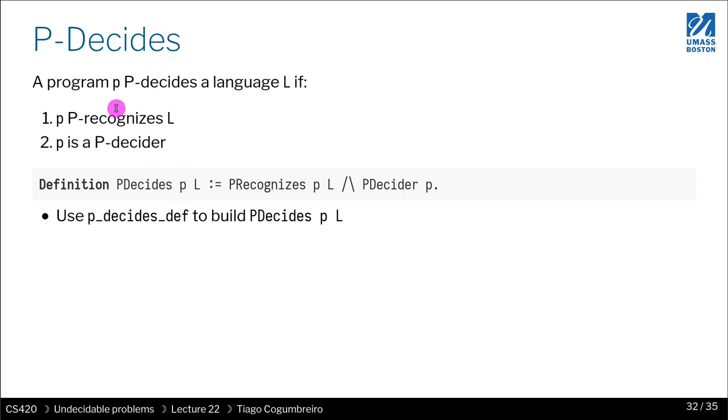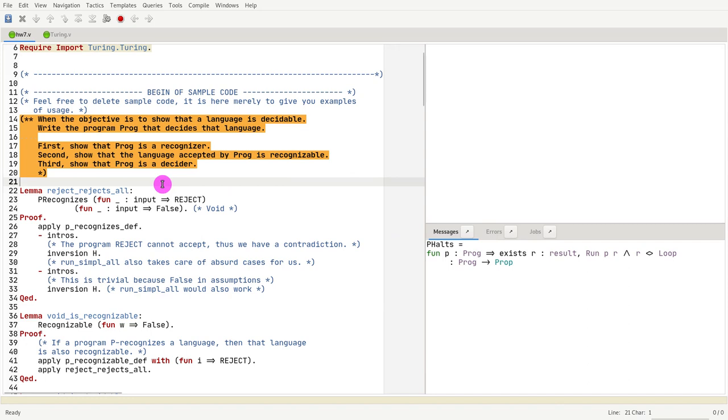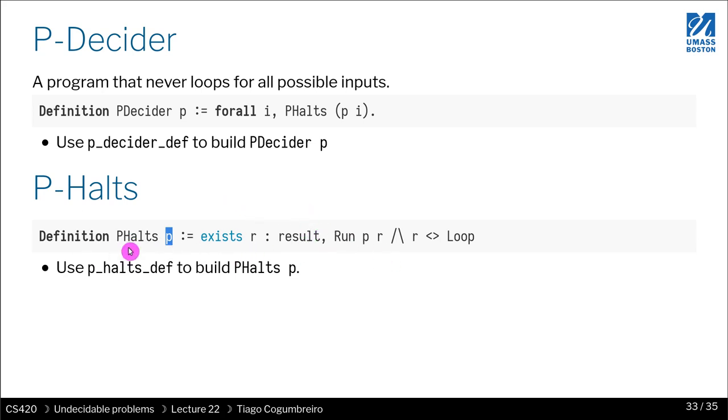What is P decides? P decides is showing two things: the program recognizes the language and the program is a decider. We already covered recognizability. What is a decider? A decider is something that for all inputs, P of I halts. What is P halts? P halts is given a program, there exists some result such that the result does not loop. Let me double check this. Yes. To show that something halts, you just need to show that by running that program, the result is not loop.